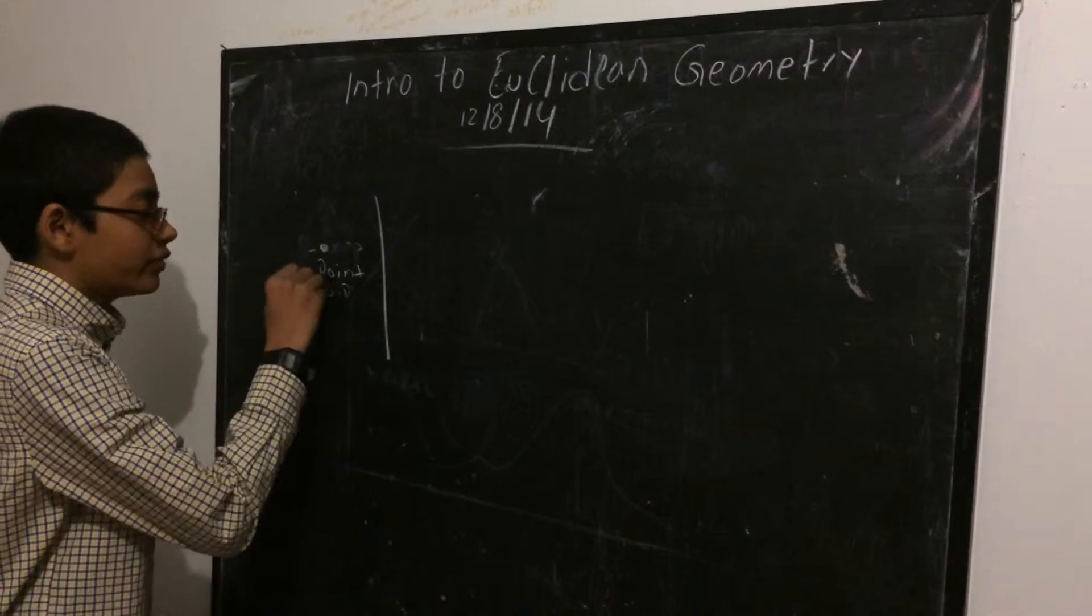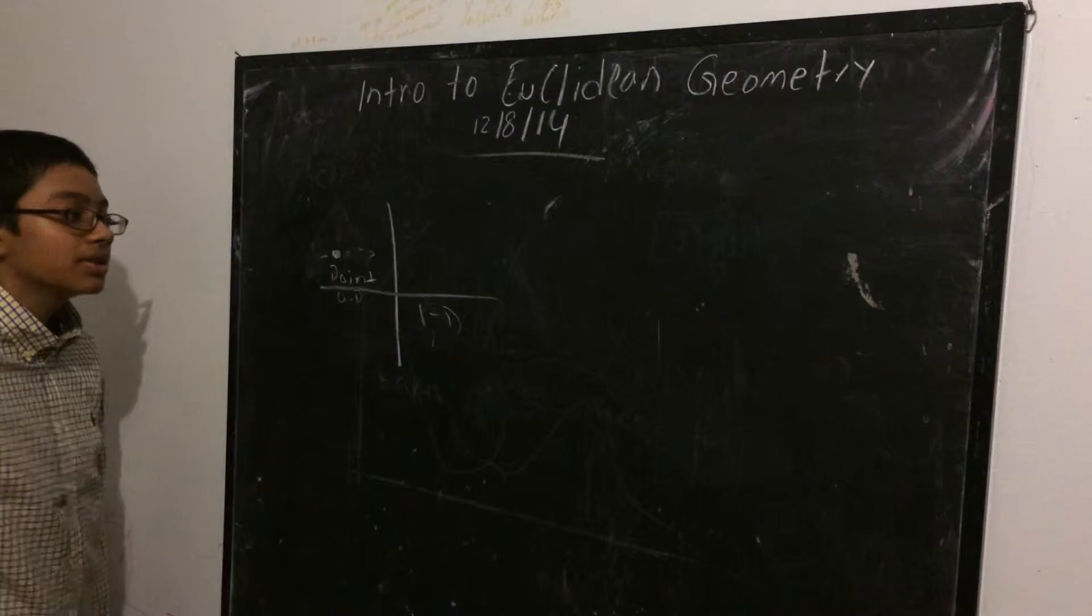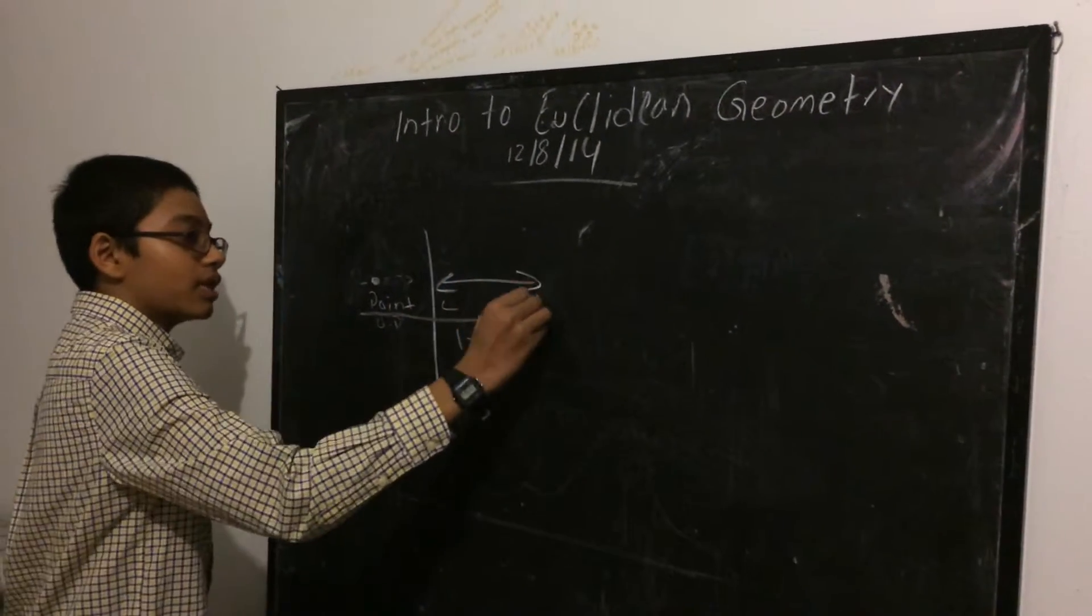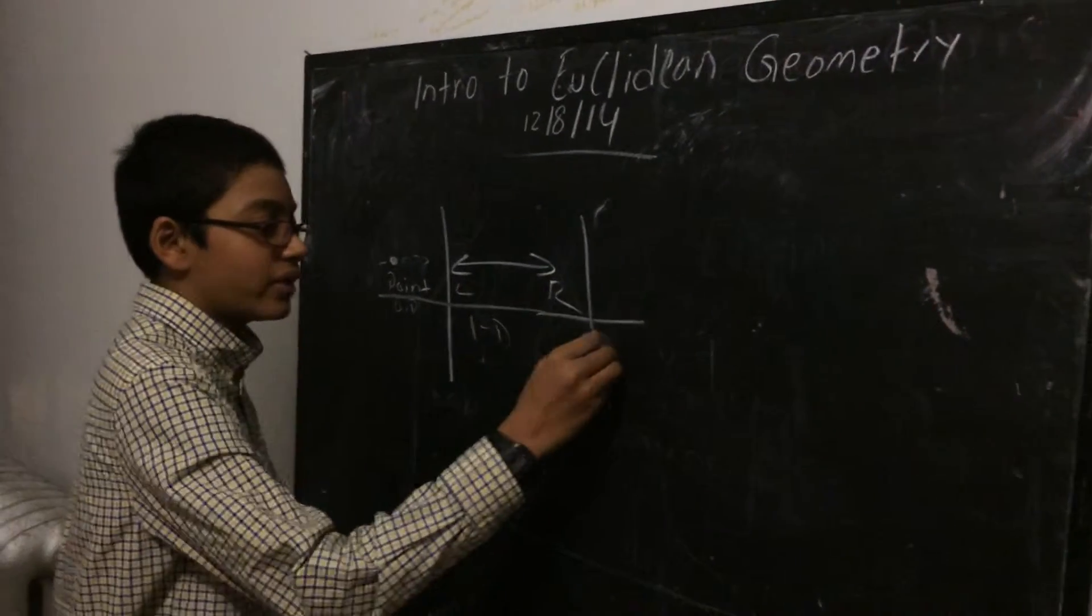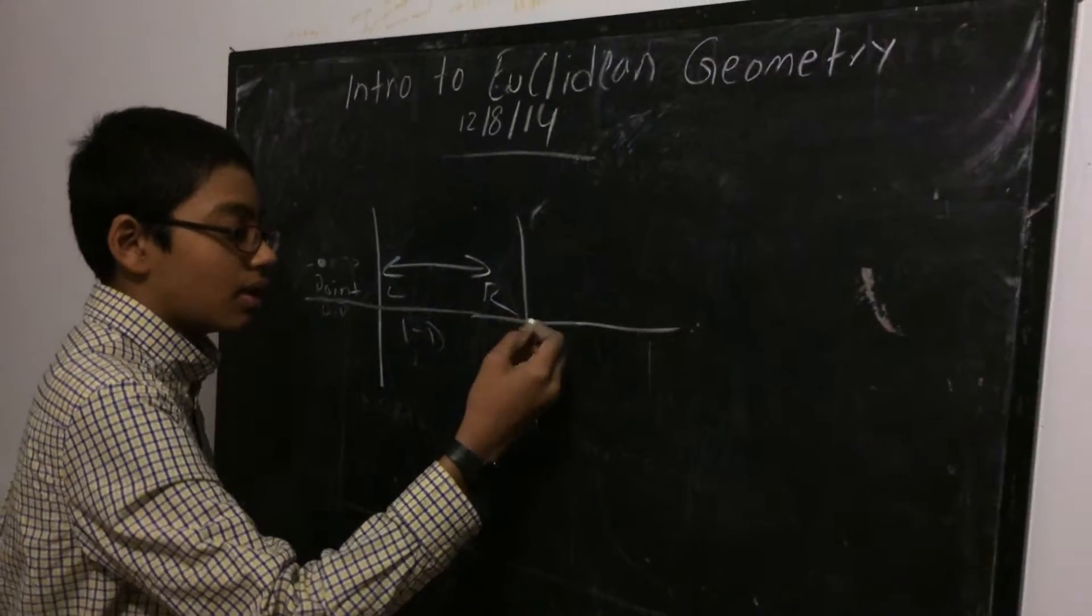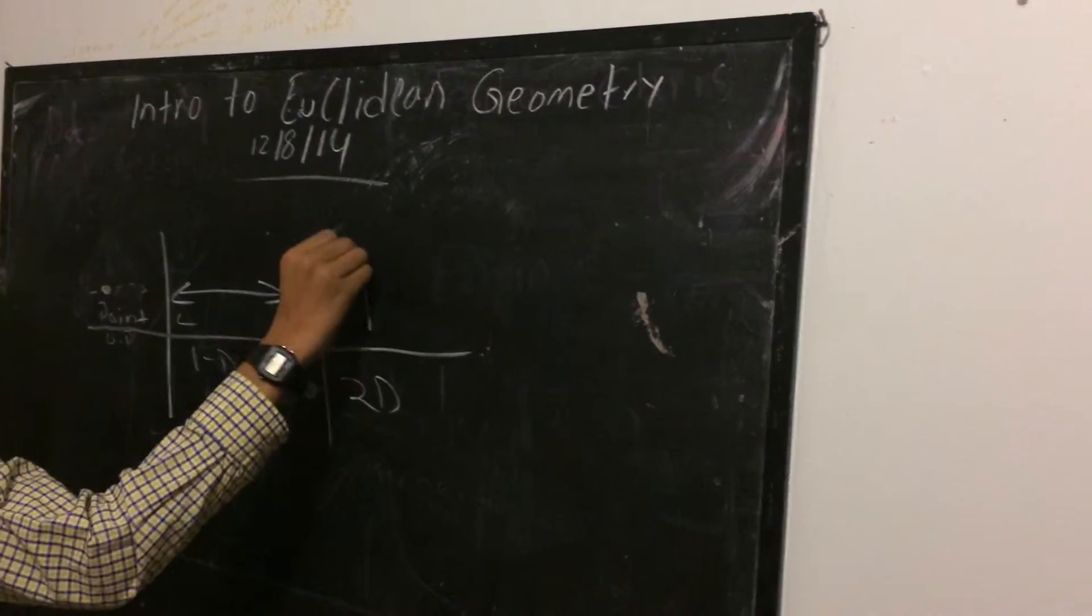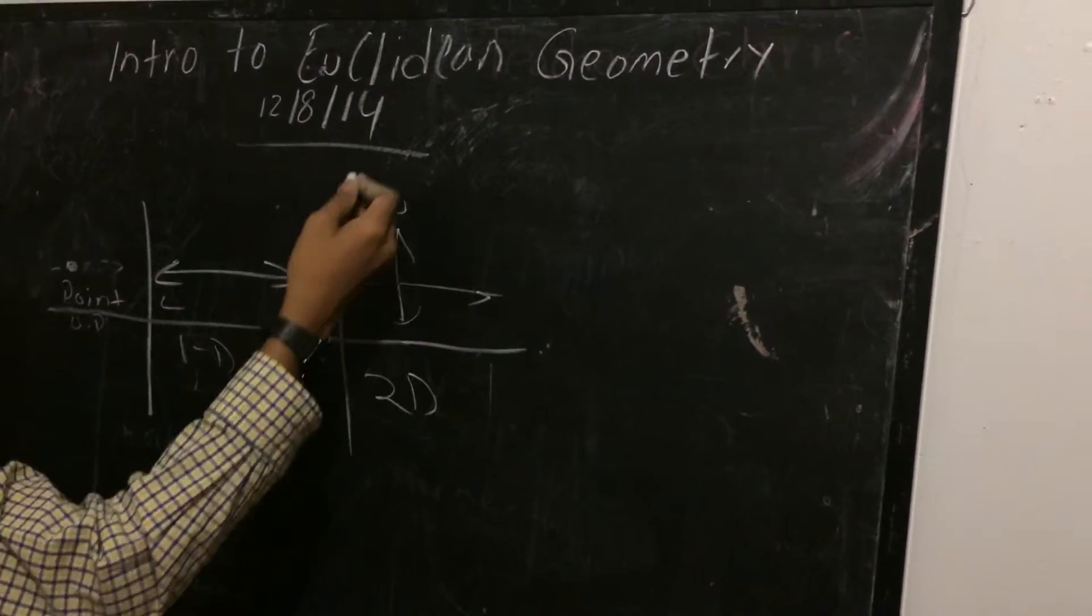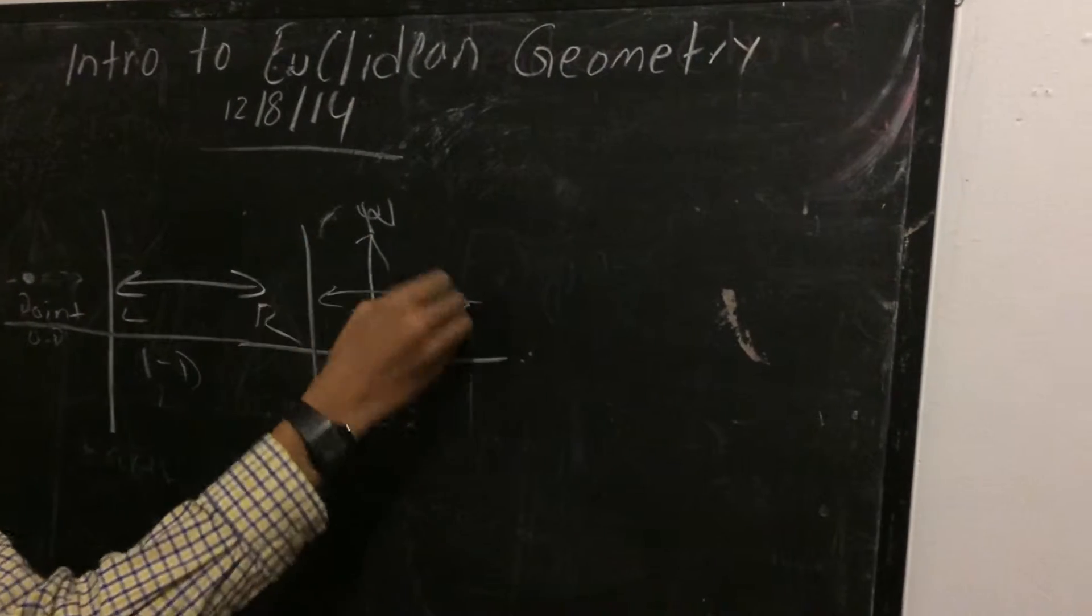And if we move on to one dimension, we have a line. A line can move left or right. And if we move on to two dimensional, we have something like the coordinate plane. Where we can go north, south, east and west.